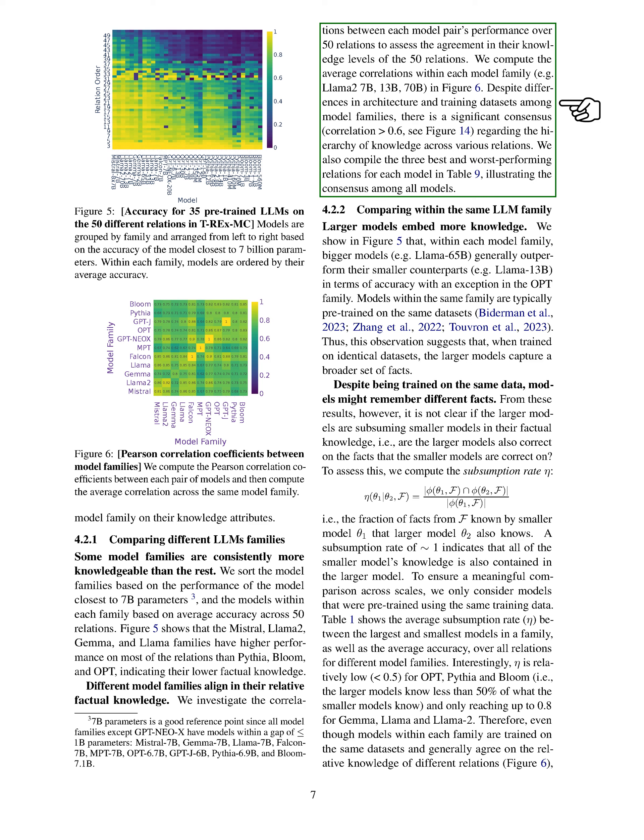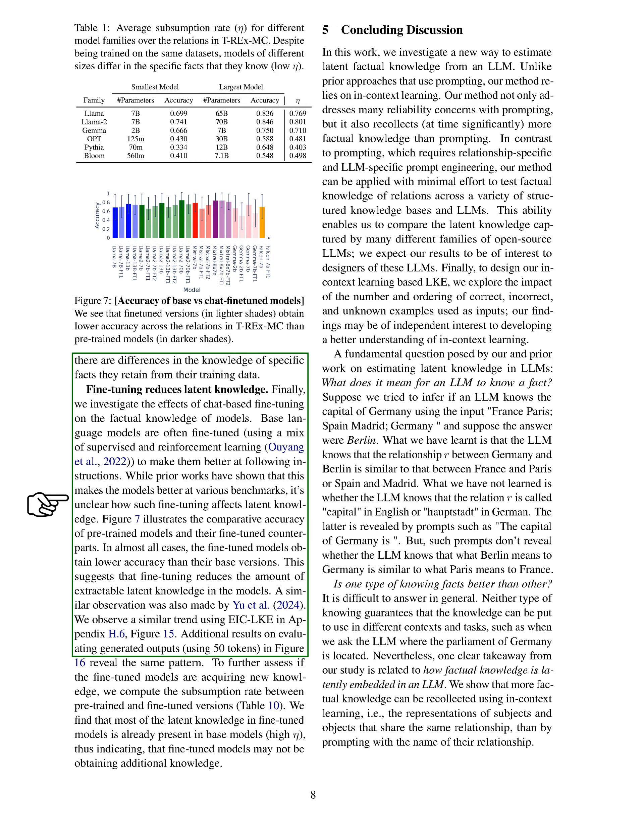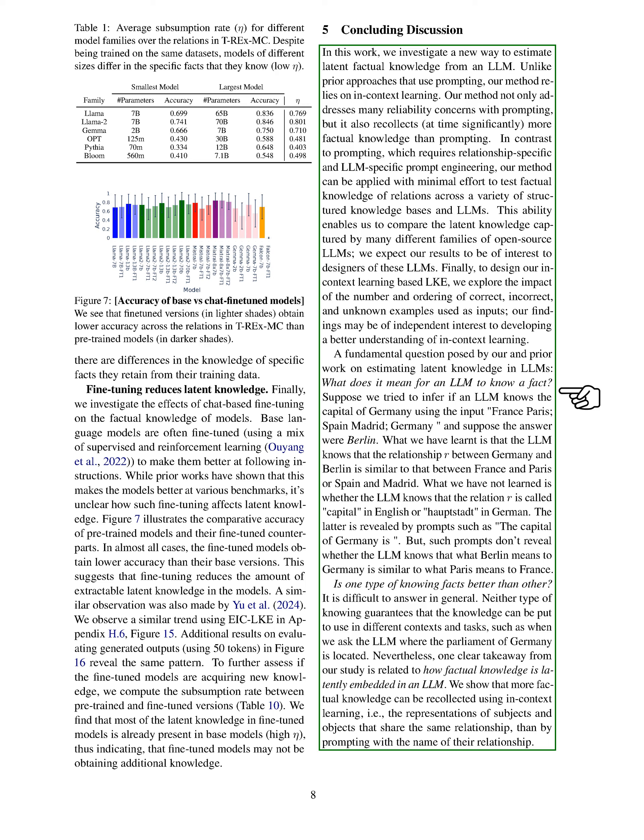This suggests that larger models capture a wider range of facts when trained on the same datasets. However, it is unclear whether larger models encompass all the knowledge of the smaller models. We also investigate the impact of fine-tuning on factual knowledge, discovering that fine-tuned models generally have lower accuracy than their base versions, indicating a reduction in extractable latent knowledge. Additionally, most of the latent knowledge in fine-tuned models is already present in the base models, suggesting that fine-tuning may not necessarily add new knowledge. Our study introduces a new method to estimate latent factual knowledge in LLMs through in-context learning, proving more effective than traditional prompting methods.